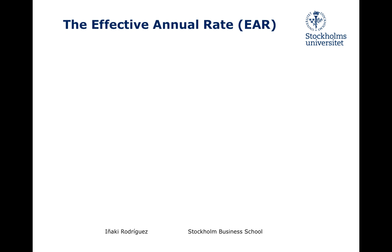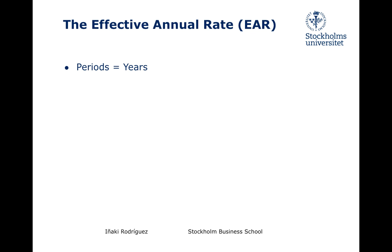So far we have always, or almost always, worked with periods whose length is equal to one year. We reasoned that the payoffs happened at the end of each year, and computing present values then is a simple procedure. The discount rate used in this case is also known as the Effective Annual Rate. The Effective Annual Rate is the discount rate which must be used when dealing with periods whose length is equal to one year.